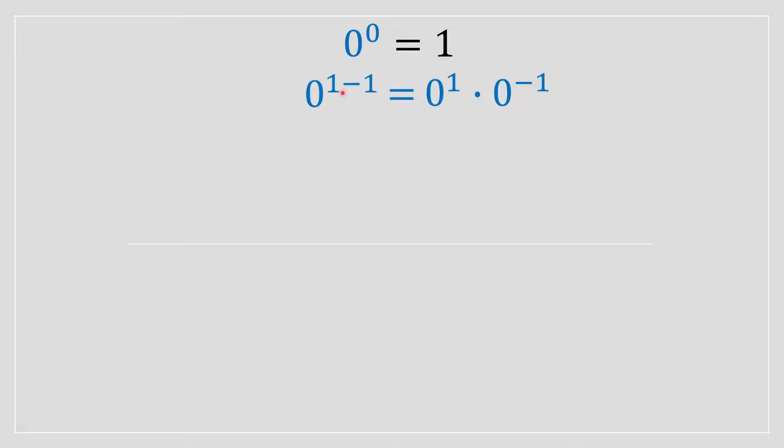And we can expand this using the laws of exponents. So we've got 0 to the power of 1, multiply with 0 to the power of negative 1. Notice we've got a negative exponent, and this could be moved into a denominator. So we're going to be left with 0 to the power of 1 divided by 0 to the power of 1, which is just equal to 0 divided by 0.